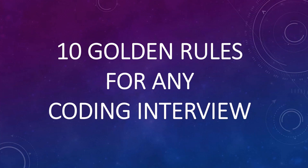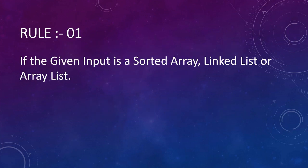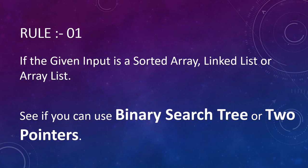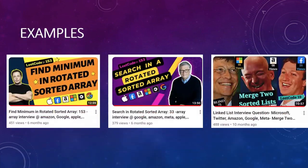Today we are going to talk about 10 golden rules for any coding interview. Rule number one defines that if the given input is a sorted array, sorted linked list, or any kind of sorted linear data structure, then we need to check whether we can solve the problem using either binary search or two pointers.